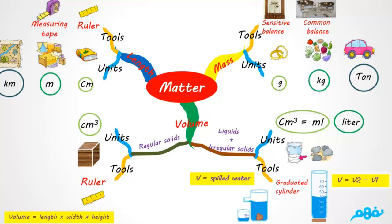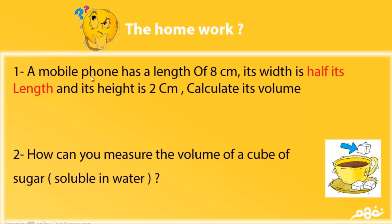The homework: A mobile phone has a length of 8 centimeters, its width is half its length, and its height is 2 centimeters. Calculate its volume. Notice that its width equals half its length.